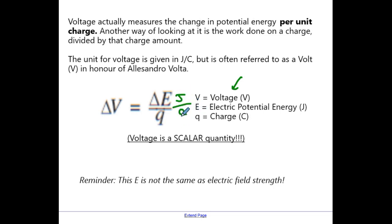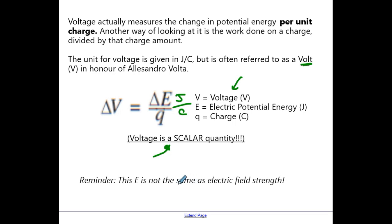Joules per coulomb is a bit of an awkward unit to utilize, so one of the more common ones we use is called the volt, named in honor of Alessandro Volta, who's usually credited as one of the first people to make a battery. One important thing to point out is that voltage is a scalar quantity — there is no direction to it. The field has a direction and the forces involved have a direction; however, the voltage itself does not have a direction.